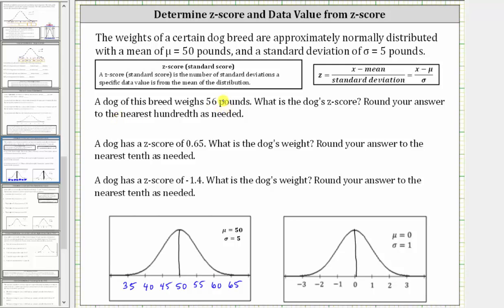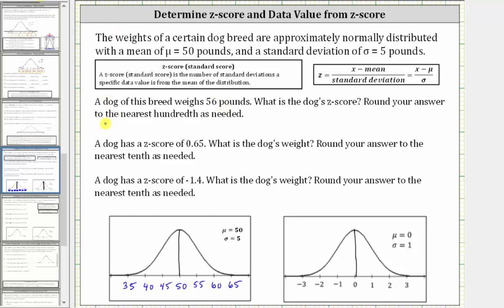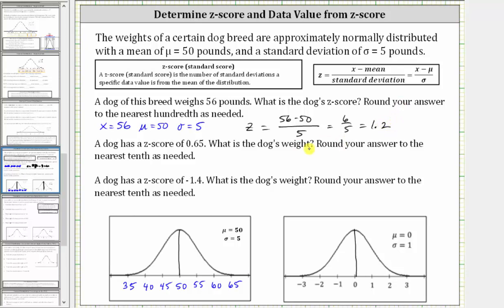Because the dog weighs 56 pounds, x equals 56 pounds, the mean (mu) equals 50 pounds, and the standard deviation (sigma) equals five pounds. Therefore, the z-score equals (x minus mu) divided by sigma, which is (56 minus 50) divided by five, which equals six-fifths, which equals 1.2. So the z-score is equal to 1.2.